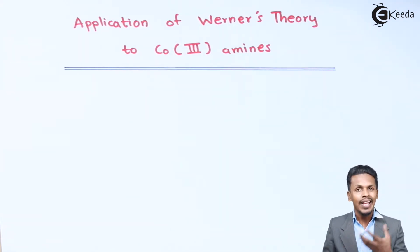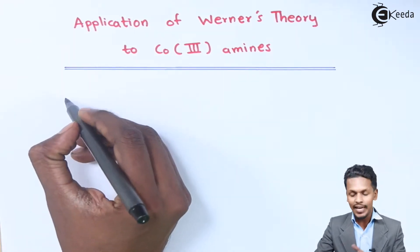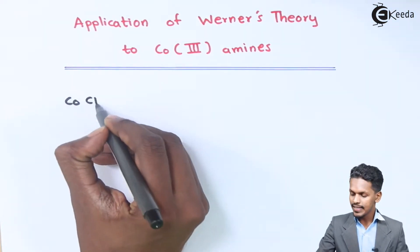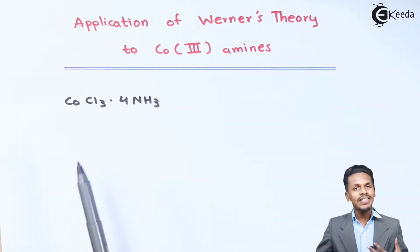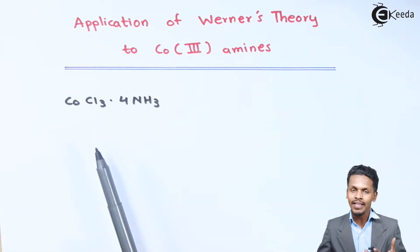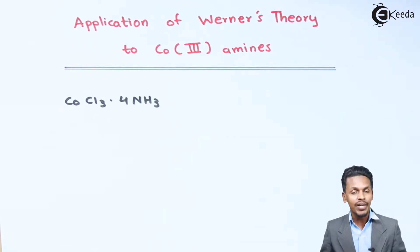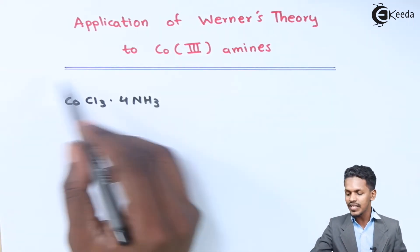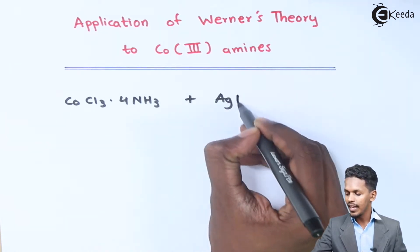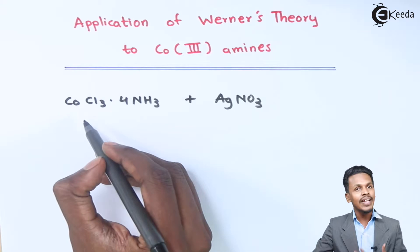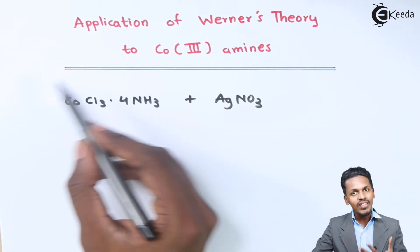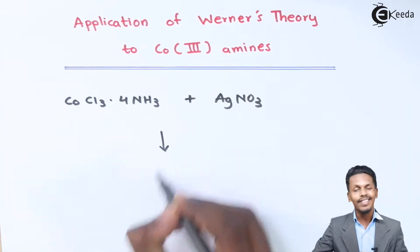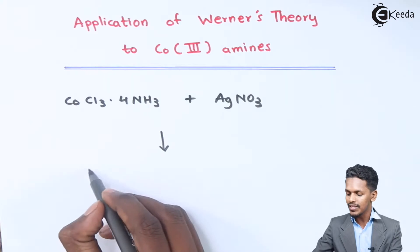Based on Werner's theory, let me introduce a particular complex — a cobalt complex, that is CoCl₃·4NH₃. In this case, whenever this compound is treated with AgNO₃, only two ions are formed.